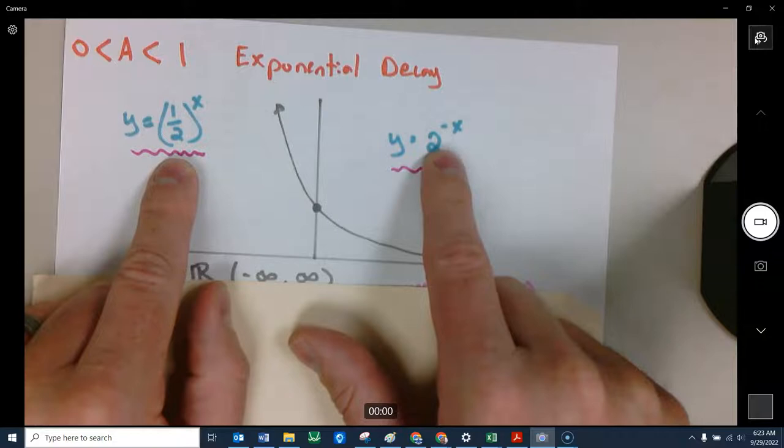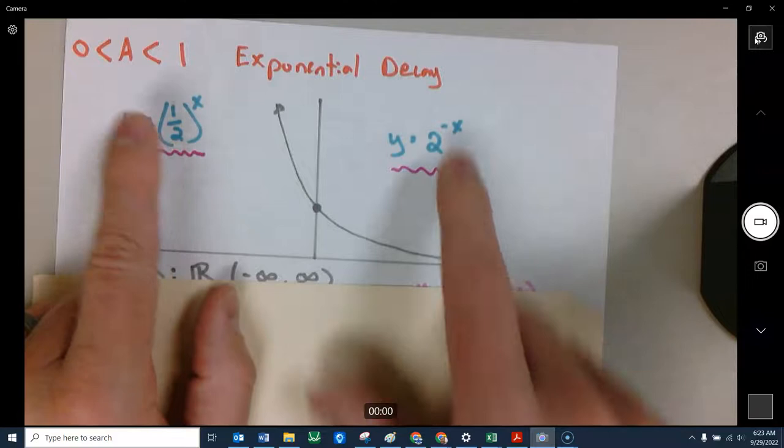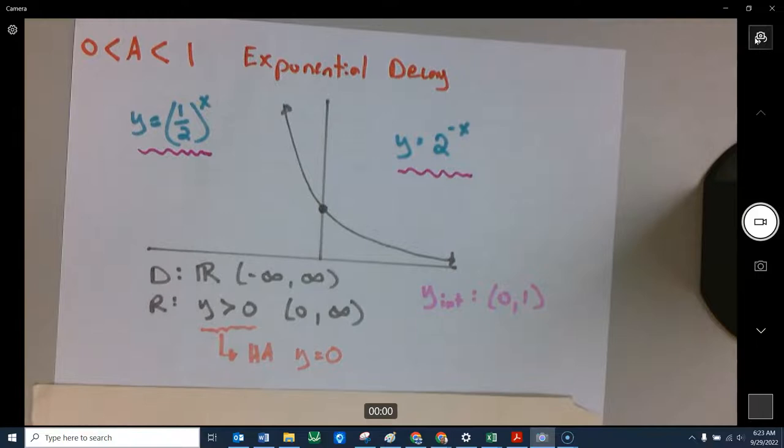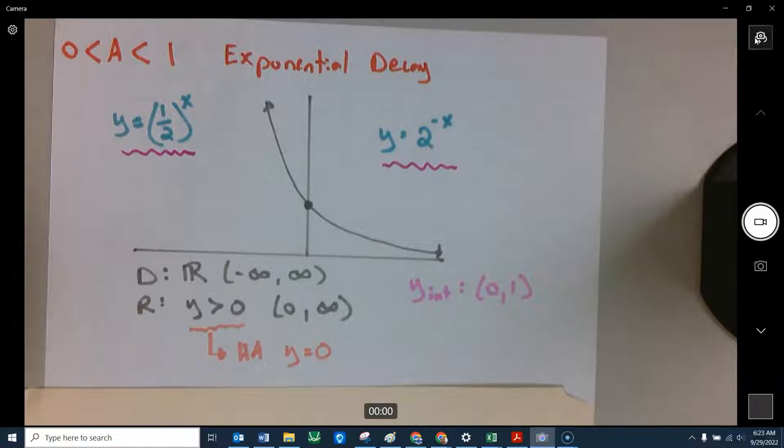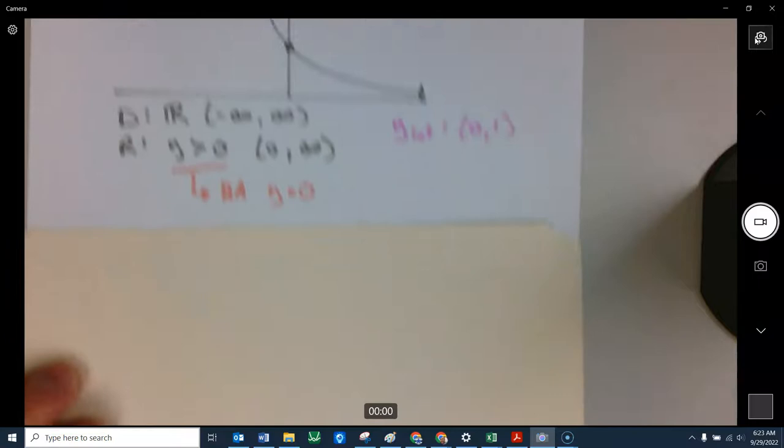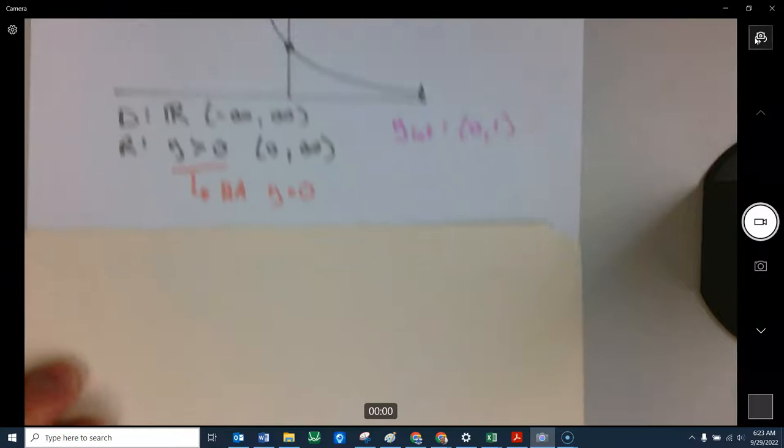This and this are the exact same function. If we raise something to the negative power, that's just like flipping the base upside down. So these are the same. Putting a negative up here is the same thing as having a fraction in here, something less than one. Same thing with the domain and range. You can plug in any number you want. The range has to be only positive numbers. Any number you plug in here for x will always kick out something positive. So our range is from zero to infinity. And we still have our same pin. If I plug in one half to the zero power, I'll still get one.